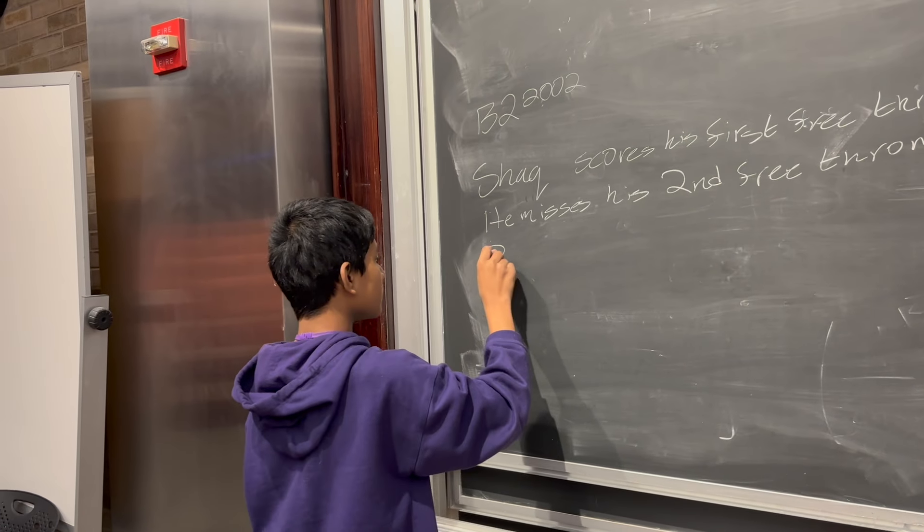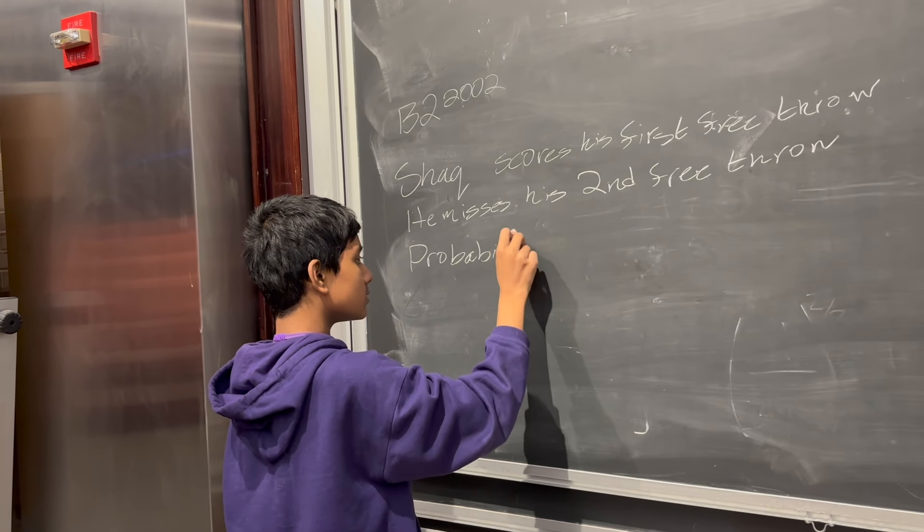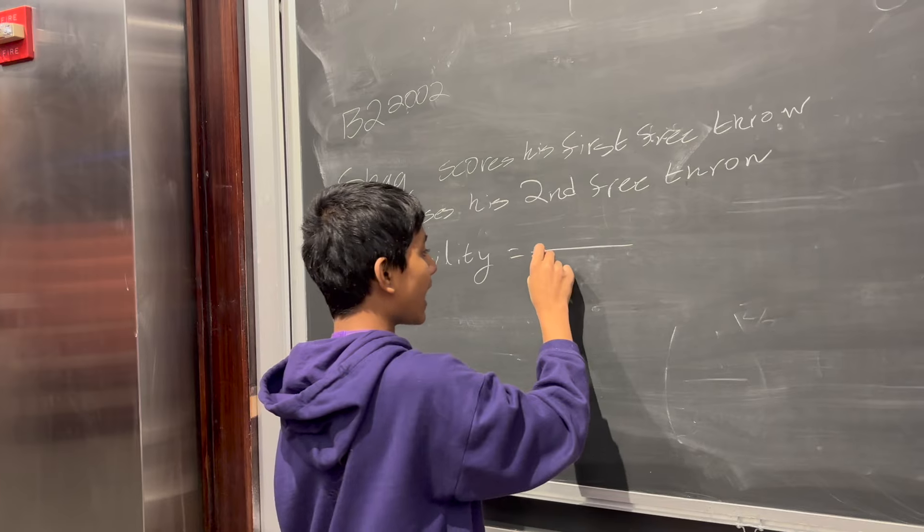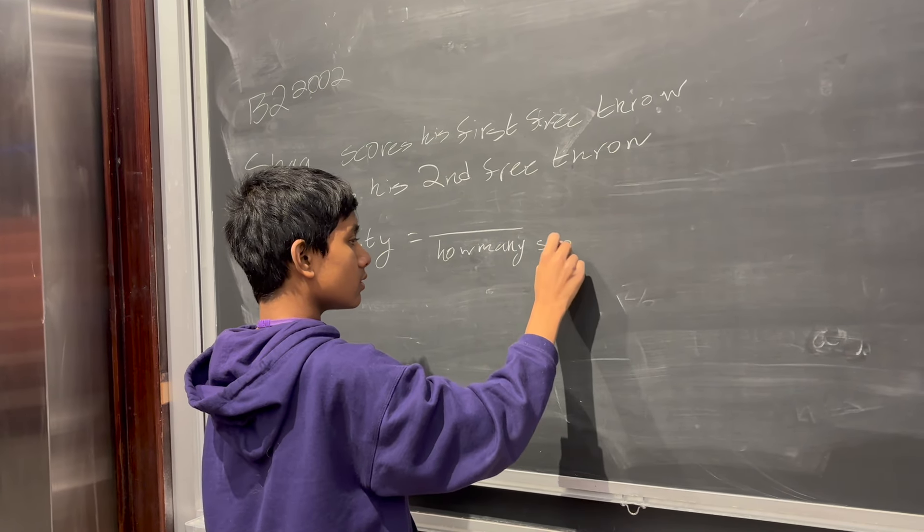Then, on the second shot, he gets tilted and misses it. From then on, the probability that he makes the next shot is equal to the proportion of how many shots he's already taken and how many shots he scored.